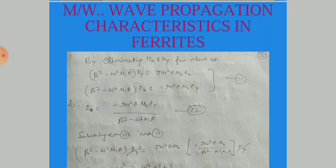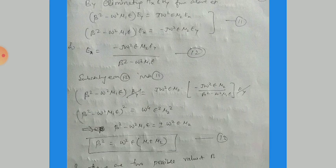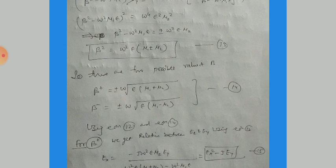Substituting Ex into the first equation and dividing both sides by Ey, we obtain: (β² − ω²μ₁ε)² = ω⁴ε²μ₂². Taking the square root of both sides: β² − ω²μ₁ε = ±ω²εμ₂. So β² = ω²ε(μ₁ ± μ₂). This gives two possible values: β₊ = ±ω√(ε(μ₁ + μ₂)) and β₋ = ±ω√(ε(μ₁ − μ₂)).